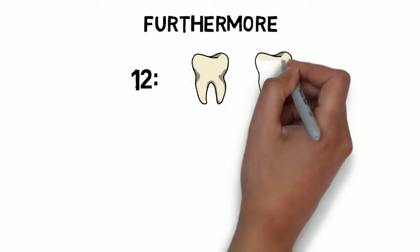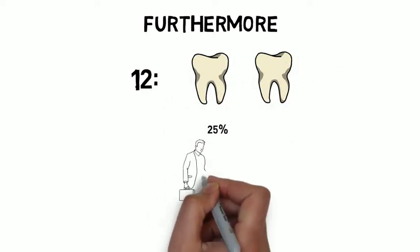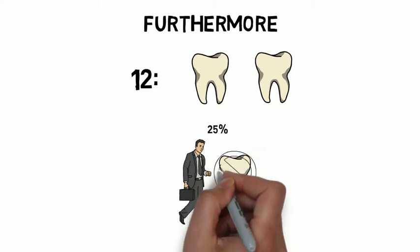Furthermore, by the age of 12, the average amount of missing, decayed, or filled teeth is 2, and 25% of all men over the age of 65 are completely missing all their teeth.